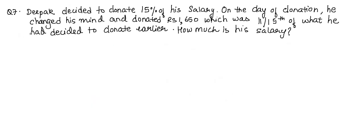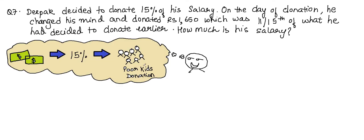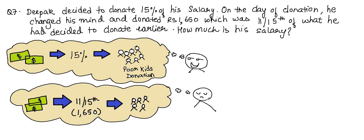Question number seven: Deepak decided to donate 15% of his salary. But he changed his mind and donated 1650 rupees, which is 11/15th of what he originally planned to donate. We need to find his salary. Let Deepak's salary be x.